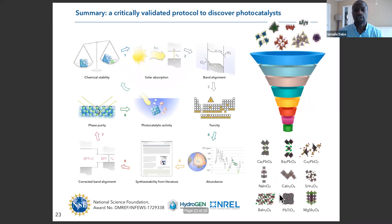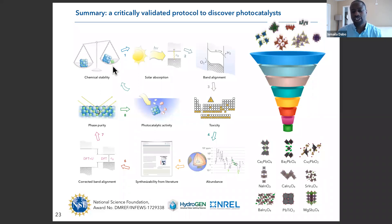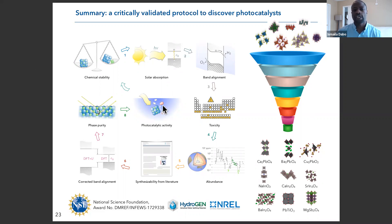I would like to conclude by saying that I hope I've stimulated your interest in this type of computational capability: take DFT, refine it to better predict electron interactions, calculate solar absorption and band alignment, then combine this with experimental synthesis, characterization, and testing to perform accelerated materials design for photocatalysis. Right now, we are doing another step of this cycle — based on what we have learned, we are discovering interesting copper-based materials that we feel could be very promising for hydrogen production.